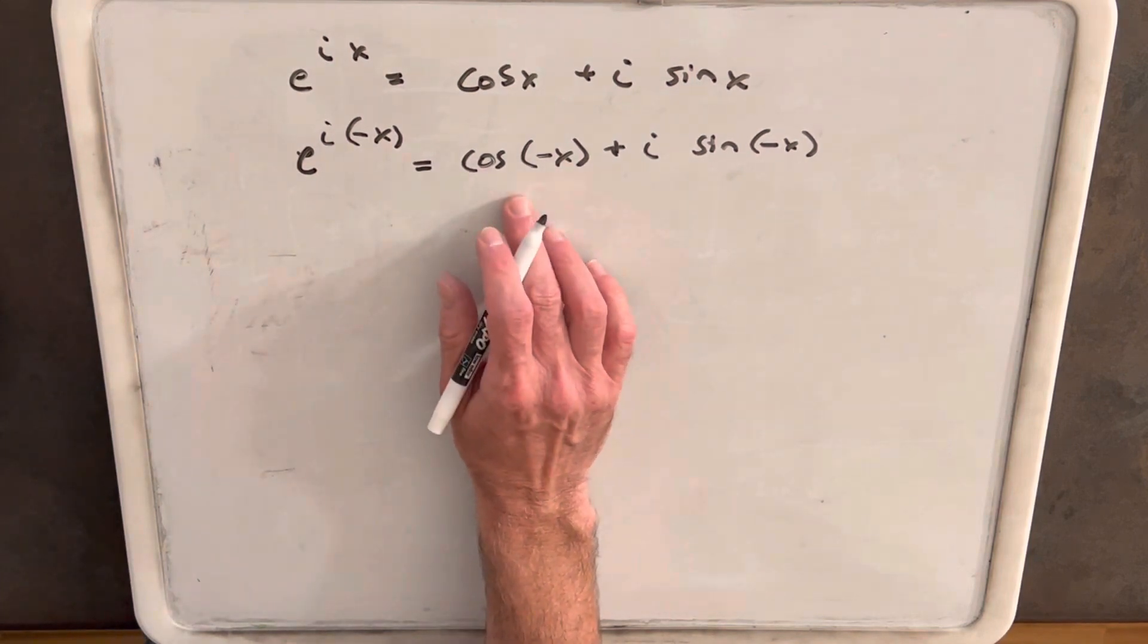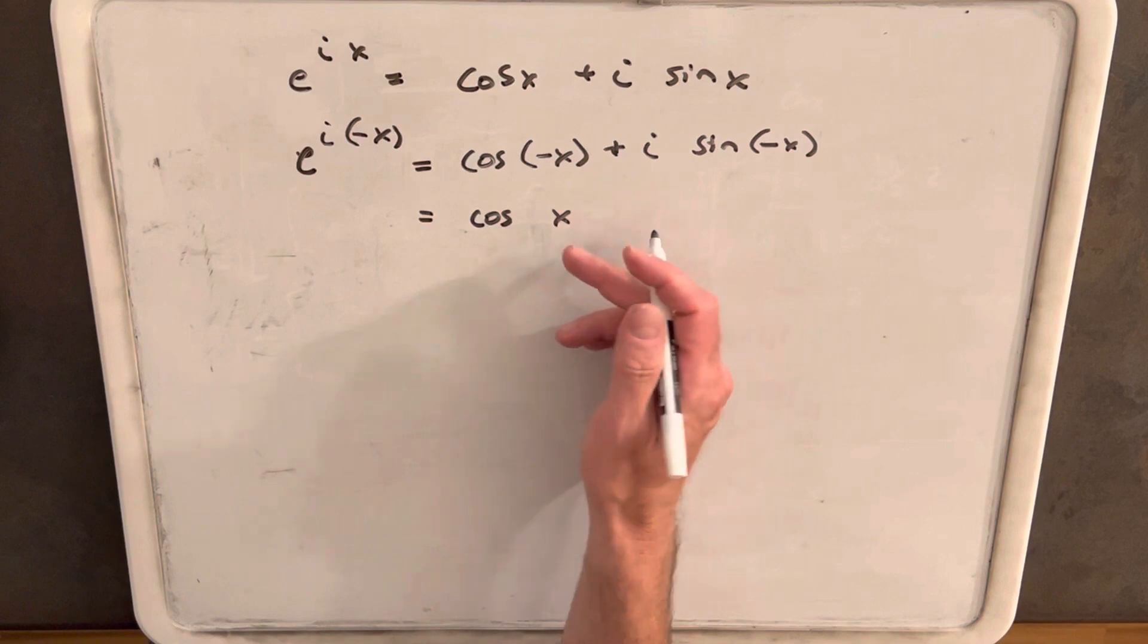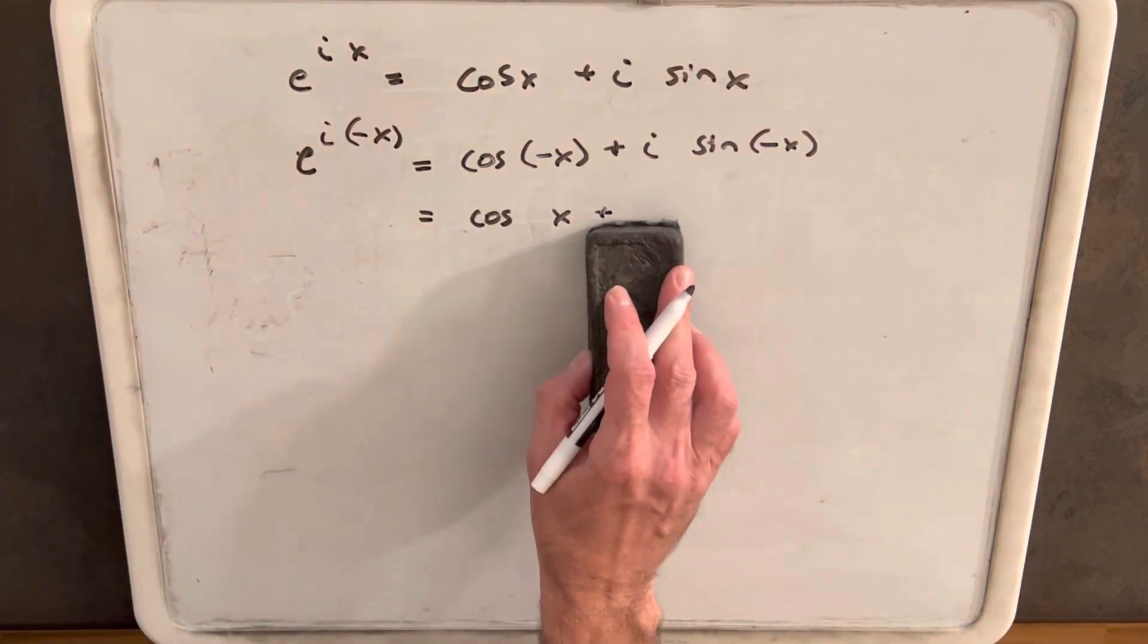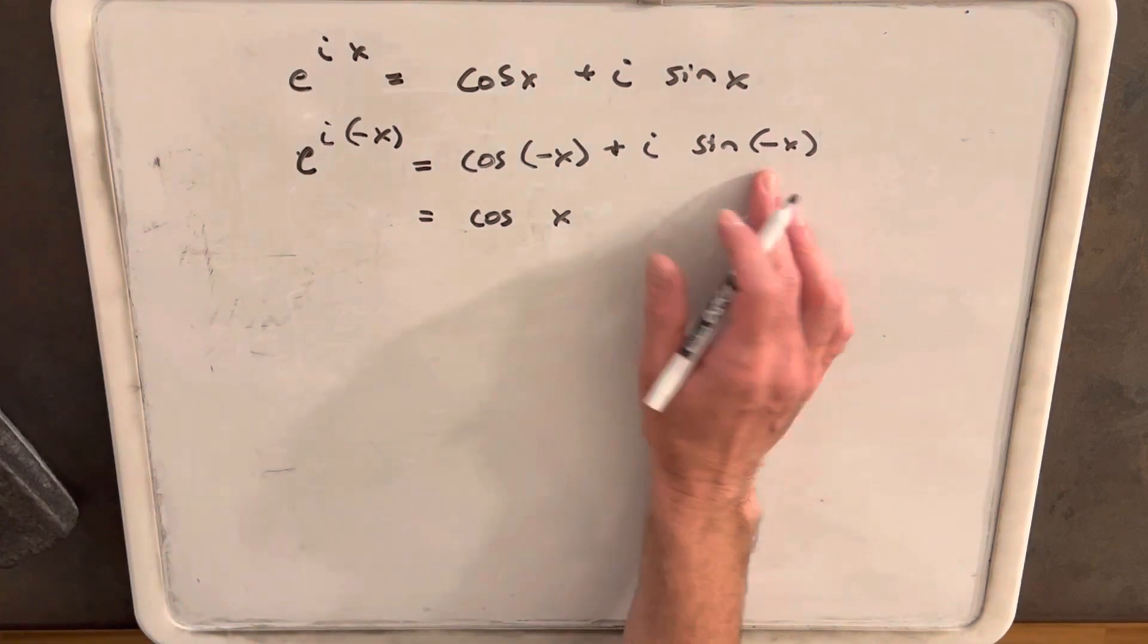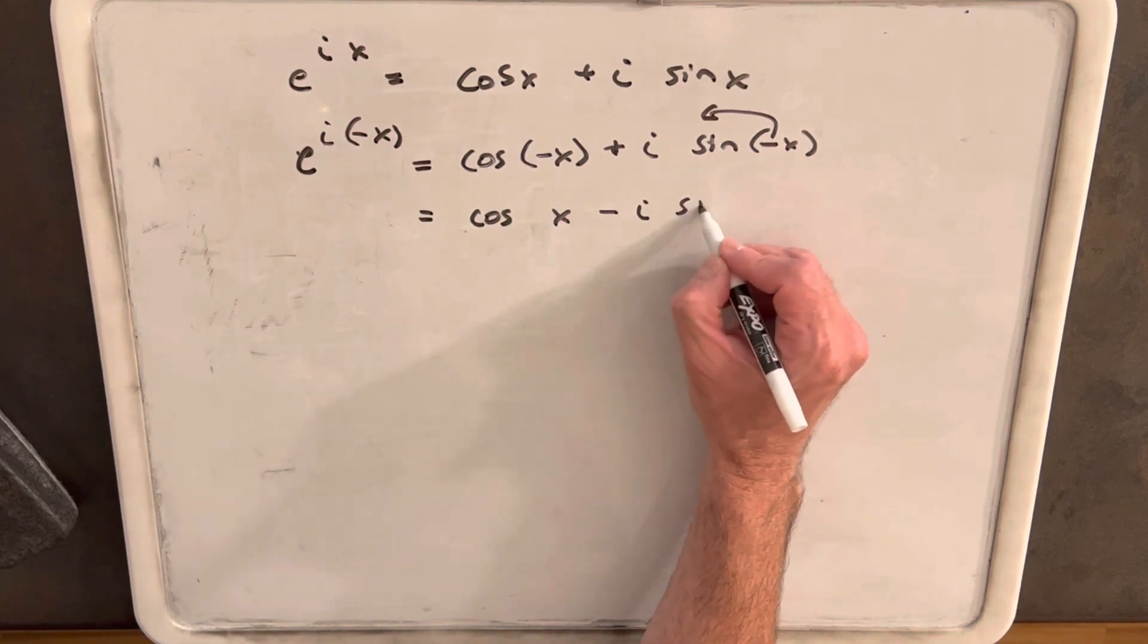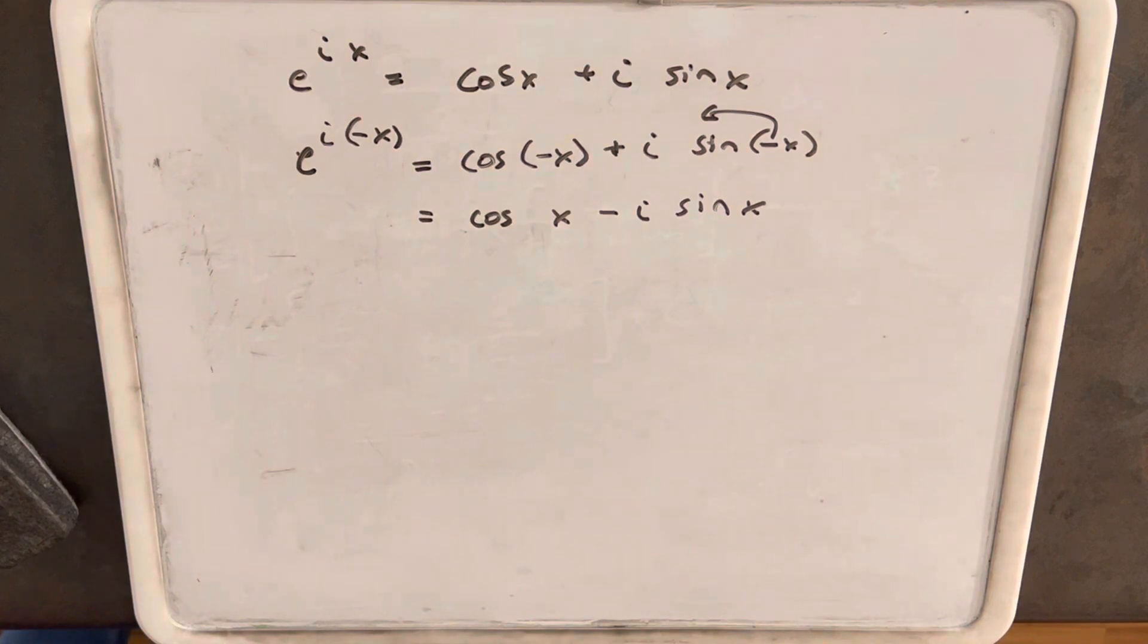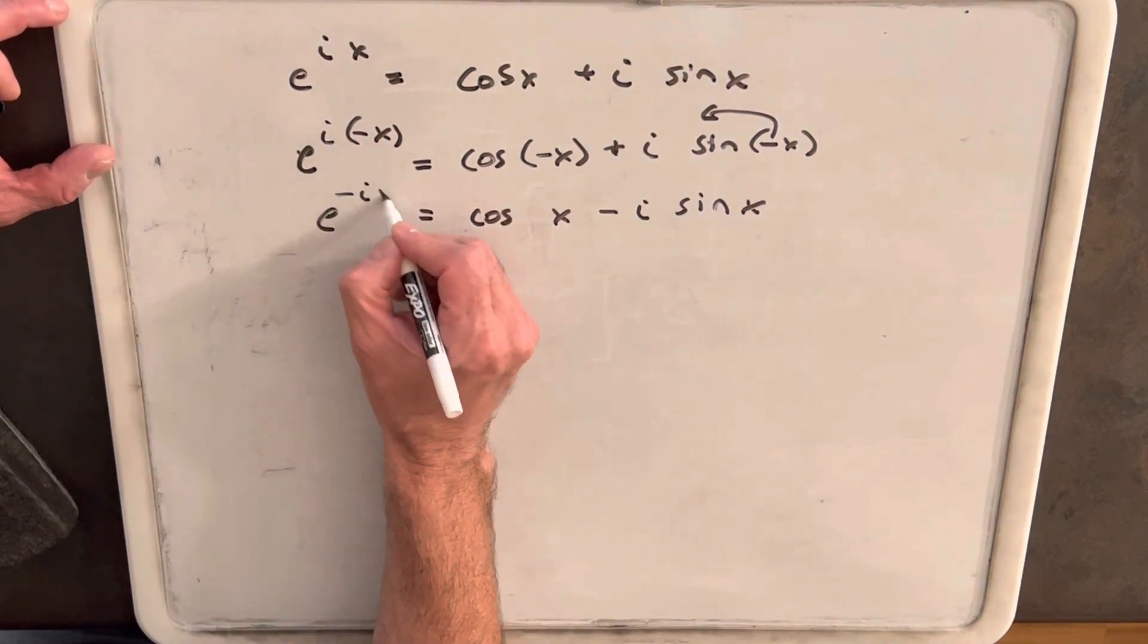And then this can be simplified because cosine is an even function. This can be just rewritten as cosine of x, because that's the definition of an even function. But sine is an odd function, so that allows us to bring the negative sign out. And so we'll have cosine x minus i sine of x. And this is all going to be the same as e to the minus ix.